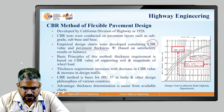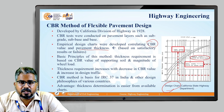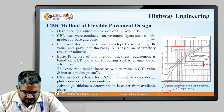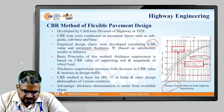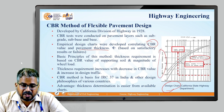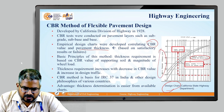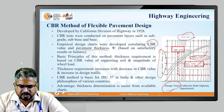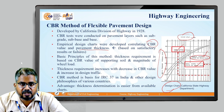Empirical design charts were developed correlating the CBR value and the pavement thickness. On the design chart, one axis shows the pavement thickness, another shows the CBR values, and the traffic condition is also indicated — whether it is light traffic, medium traffic, or heavy traffic.